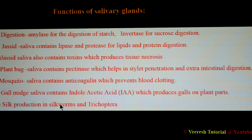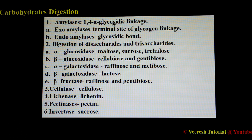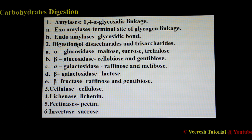In some insects like Trichoptera and silkworms, salivary glands help in production of silk. Next are the enzymes involved in digestion. For carbohydrate digestion, amylases act on 1,4 alpha-glycosidic linkages. There are two types: exoamylases and endoamylases, which act on terminal sites and internal bonds of glycosidic linkages respectively. Disaccharides and other oligosaccharides or polysaccharides are broken down into monosaccharides for absorption. Enzymes involved include alpha-glucosidases, beta-glucosidases, alpha-galactosidases, beta-galactosidases, and beta-fructase.